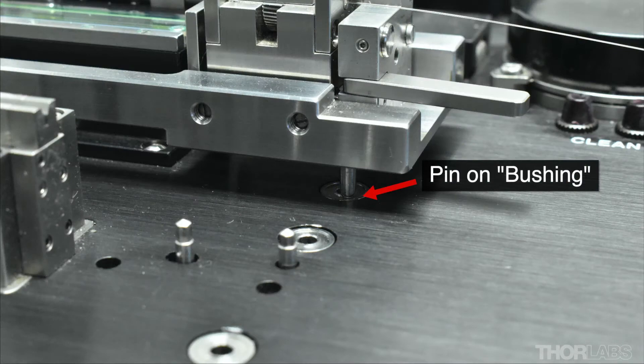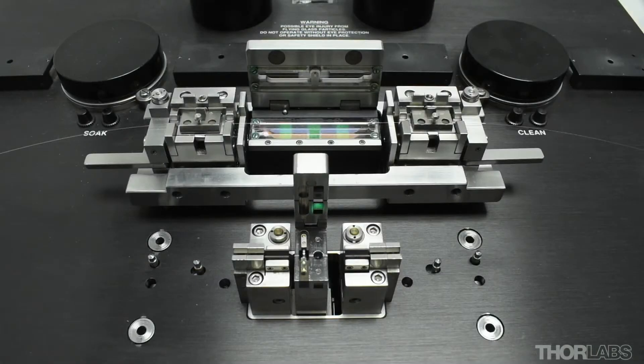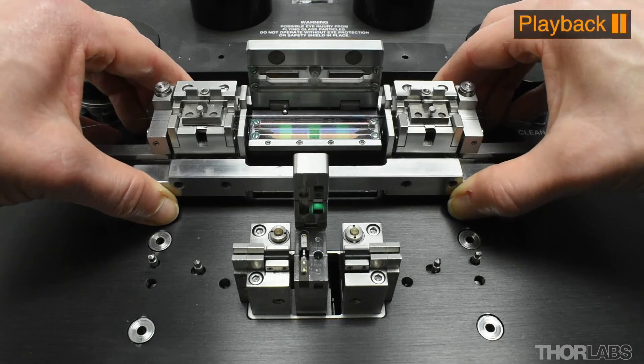Place the pins of the transfer jig on the bushings around the mold so that it is raised slightly off the top surface of the unit. Load the fiber into the recoat station by positioning the pins on the underside of the transfer jig over the alignment holes.